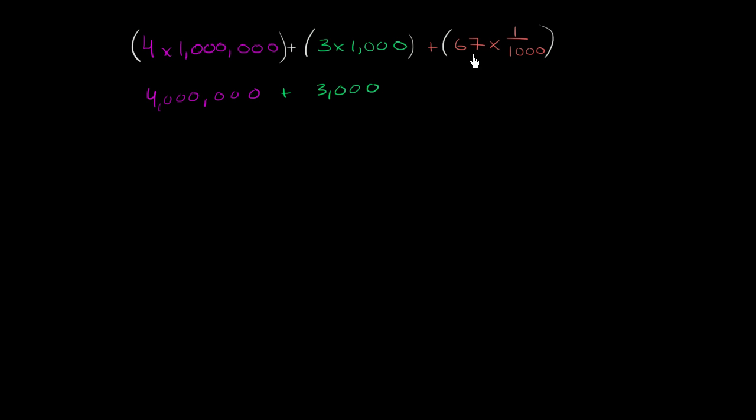What is 67 times 1 over 1,000? There's a bunch of ways of thinking about this. Let me write them all over here. I'll do the most obvious one right over here. 67 times 1 over 1,000 is 67 thousandths.